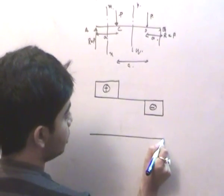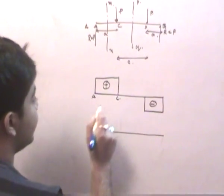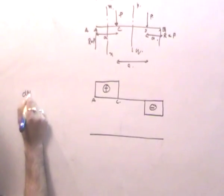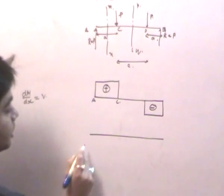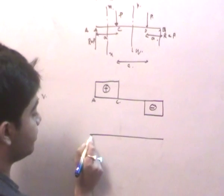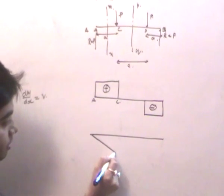From this diagram we can also draw the bending moment diagram. Between point A and C, we know that dM/dx equals V. So if V is constant, M must be a linear function of x. And if this is positive, it should be a positive linear function, a sagging moment.